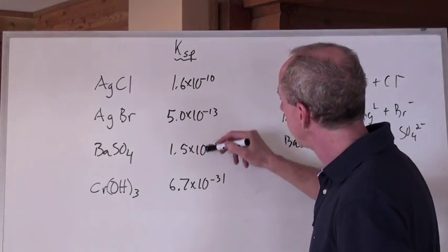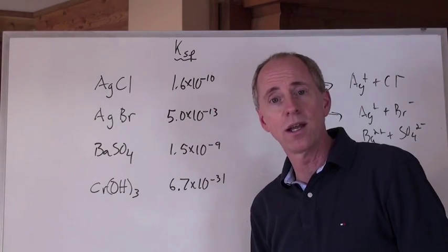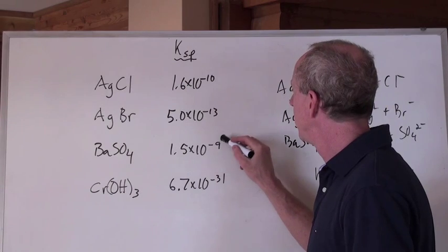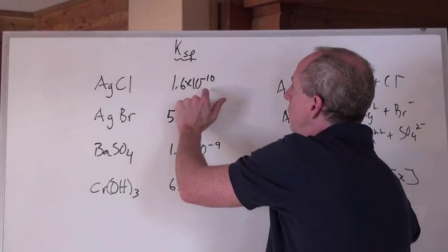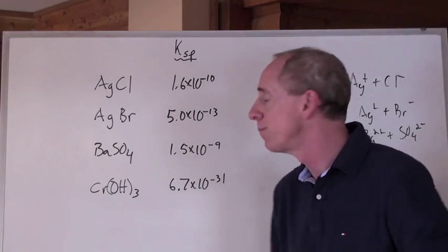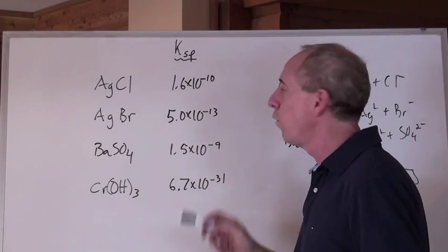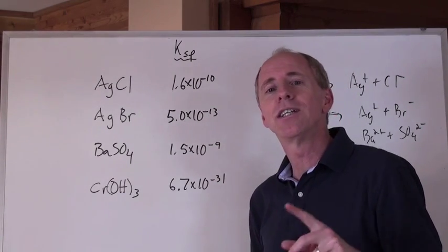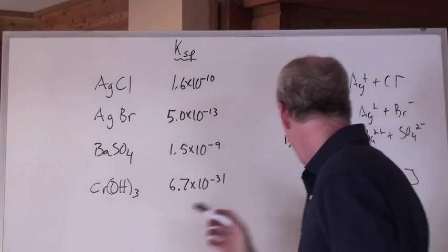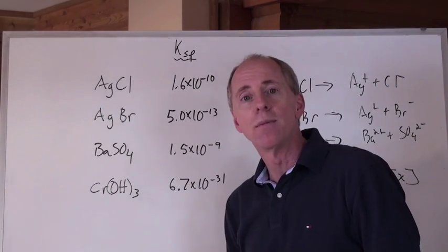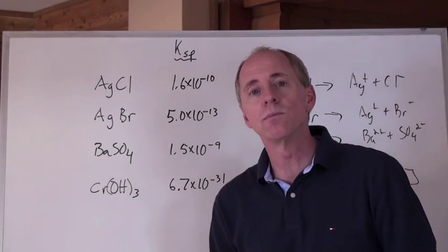So what do you do with all these numbers? You just take the square root of the KSP and compare them. The square root of 10⁻¹⁰ is 10⁻⁵, giving you 10⁻⁵, 10⁻⁶·⁵, and 10⁻⁴·⁵. The one with the lowest X is AgBr at 10⁻⁶·⁵ — that's the lowest molar solubility.